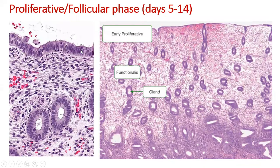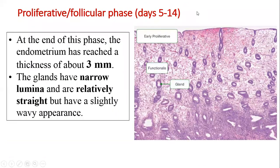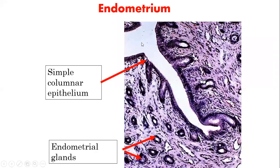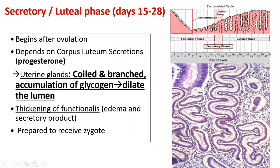In the proliferative phase, the epithelium is simple columnar with formation of lamina propria. The glands are formed by epithelial invagination; they are small, short, straight glands covered by simple columnar epithelium — not very coiled. If you see this type of picture with somewhat straight, short, uncoiled glands, this is the early proliferative phase. At the end of this phase, the endometrium will be up to three millimeters thick with glands having a narrow lumen.